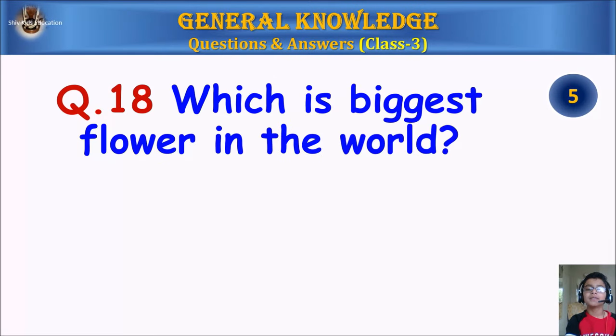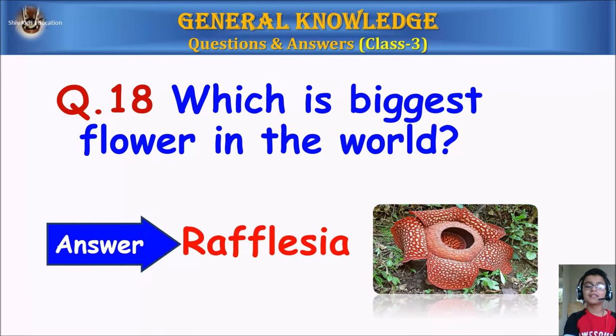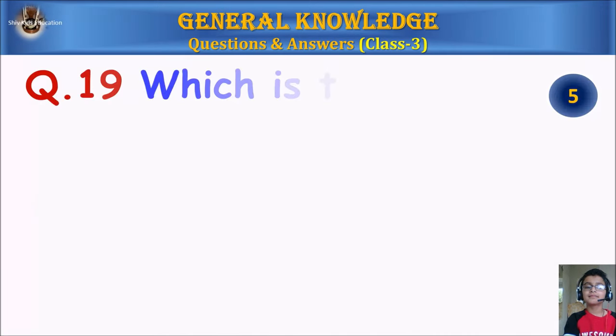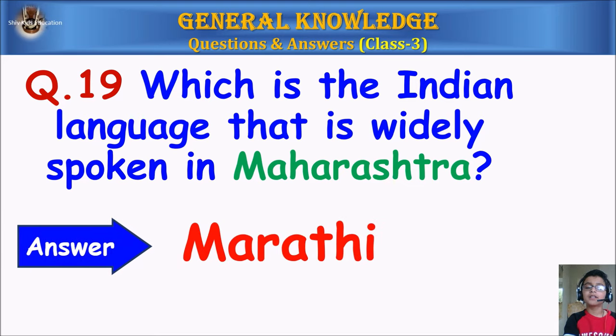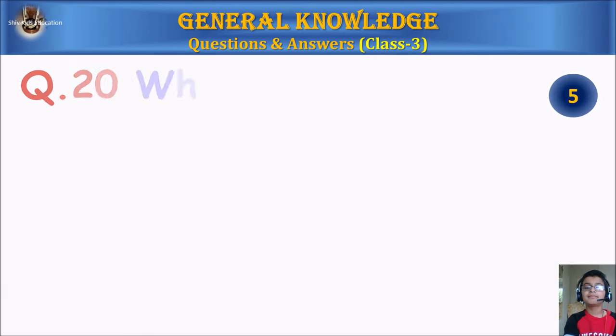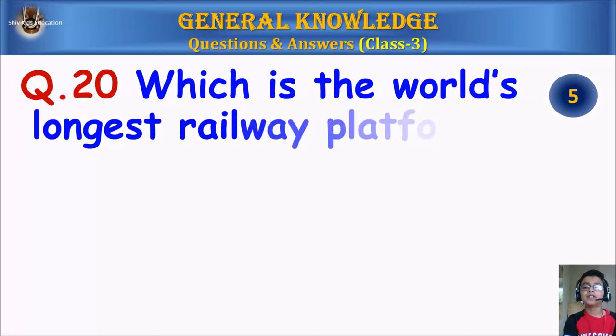Question 18: Which is the biggest flower in the world? Your time starts. Answer: Rafflesia. Question 19: Which is the Indian language that is widely spoken in Maharashtra? Your time starts. Answer: Marathi. Question 20: Which is the world's longest railway platform? Your time starts. Answer: Gorakhpur, UP, India.